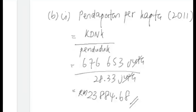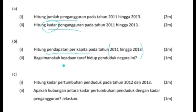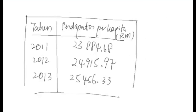Kita sambung soalan yang seterusnya - Soalan B2, roman dua: Bagaimana keadaan taraf hidup penduduk di negara ini? Bagaimana kita nak ukur taraf hidup berdasarkan data apa? Pendapatan perkapita. Dengan reti kata lain, kalau kita nak ukur taraf hidup penduduk di negara tersebut, kita akan rujuk maklumat bagi pendapatan perkapita. Peningkatan pendapatan perkapita menunjukkan keadaan taraf hidup penduduk negara ini semakin meningkat.